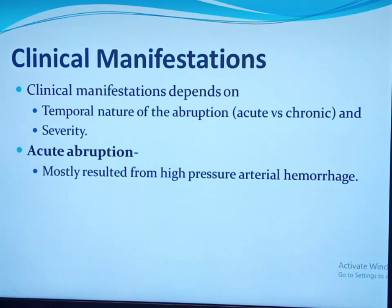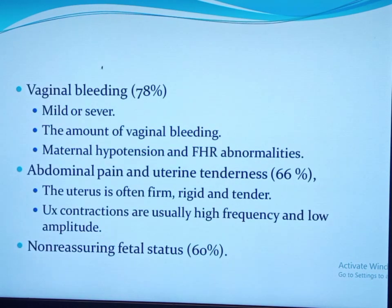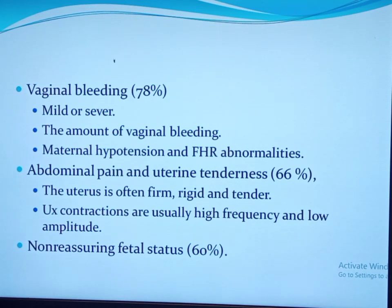Clinical manifestations depend on whether abruption is acute or chronic and on its severity. Acute abruption results from high-pressure arterial hemorrhage at the central part of the placenta, leading to rapid, life-threatening manifestations including vaginal bleeding, non-reassuring fetal heart rate, uterine tachysystole, and fetal death. Vaginal bleeding is the commonest manifestation, occurring in 78 percent of cases. However, the amount of vaginal bleeding does not predict the extent of placental separation, since concealed hemorrhage occurs in 10 to 20 percent of cases.